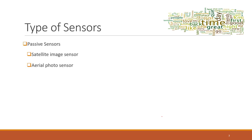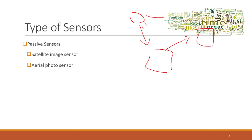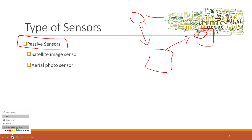Two weeks ago we talked about satellite images and air photos. We know there are different types of sensors that capture reflected energy from the sun — the sun sends out light to objects, objects reflect part of that energy back to our sensor, and the sensor captures those reflected energies and converts them into products like satellite images and air photos. Those sensors are considered passive sensors, meaning they just capture reflected light or energy from the sun.